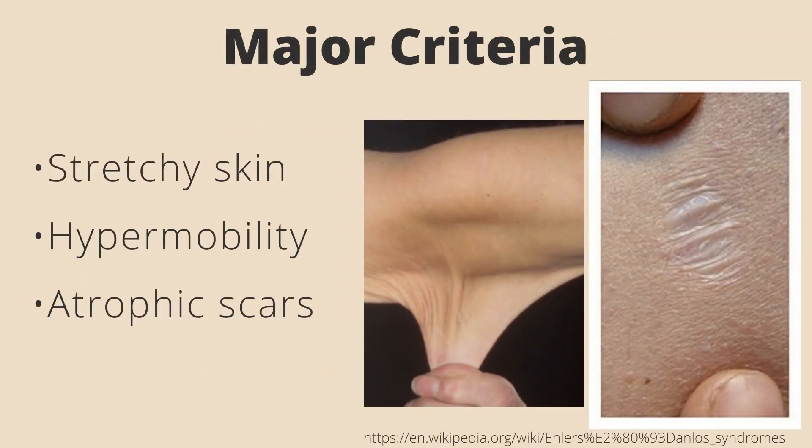Major criteria include stretchy skin, hypermobility, and atrophic scars. Hypermobility is determined with the Beaton Scale, which is a 9-point scale testing the range of knees, elbows, pinky fingers, and whether you can touch the floor with your hands. This scale is covered in detail in another video.